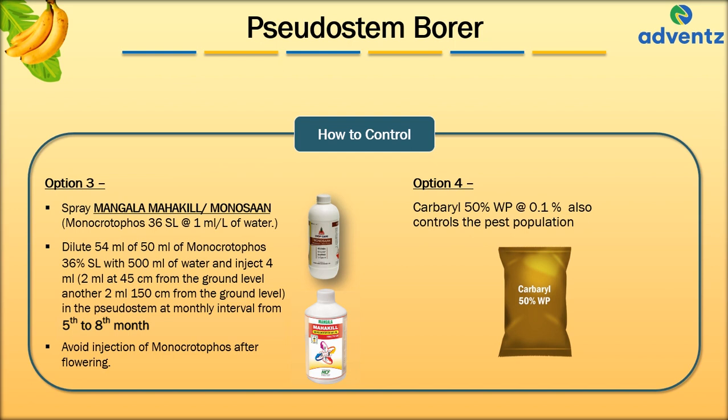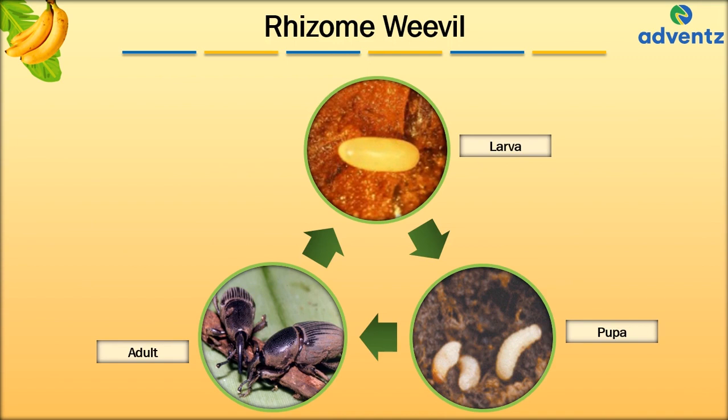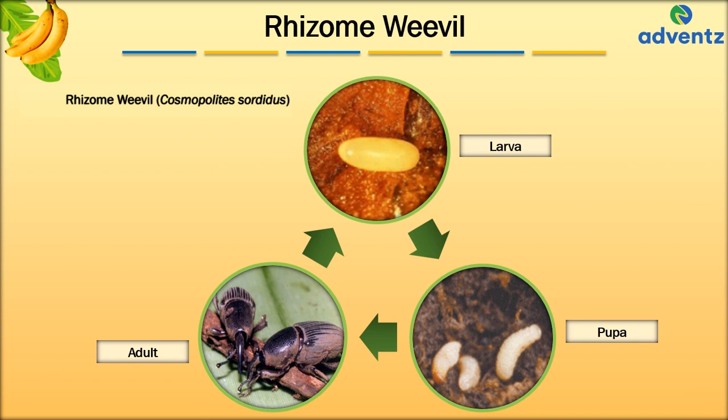The next pest is Rhizome Weevil, also called Cosmopolitis sordidus. As seen in the images, Rhizome Weevil emerges into a larva, which grows into a pupa before finally becoming an adult. The symptoms of Rhizome Weevil are seen in the images.